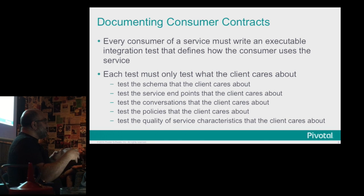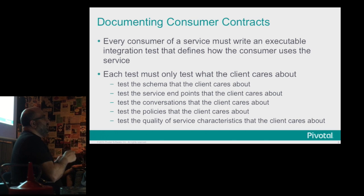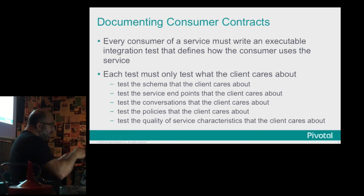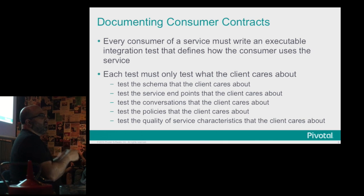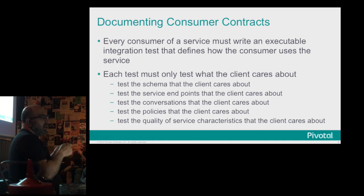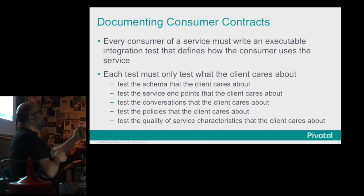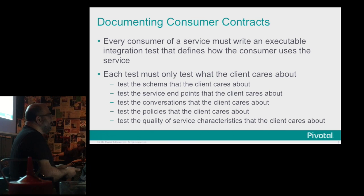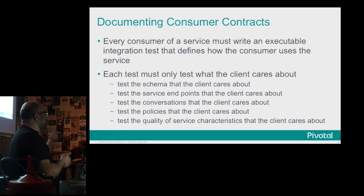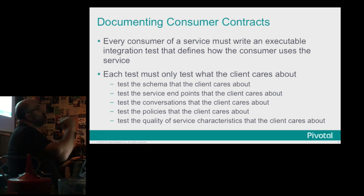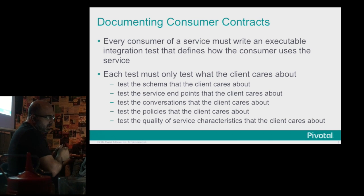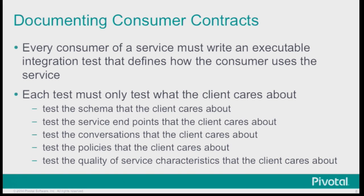Every consumer of a service is going to do this by writing an executable integration test. They're not going to give you a wiki page, a PDF file, or a markdown file. They're going to give you a test that you can run. In that executable test, they will call your operations and check that they get back the fields they care about. It will invoke only the endpoints it cares about. If your API exposes five operations but they care about three, they'll try the three they care about. They'll check conversational state, quality of service, and usage policies.